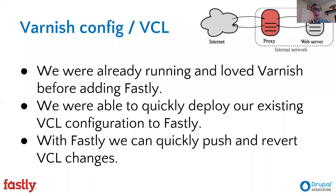When we had the opportunity to start using Fastly, it let us move that proxy server off our internal network and out to the internet. Fastly is essentially a giant distributed Varnish, and since we were already using Varnish and Fastly is based on it, we could take our same configuration and push it out to the world. This truly reduced network traffic hitting our origins and moved caching closer to the global Drupal.org community. Deploying, loading new configuration, reverting changes, and testing through Fastly's interface was very easy.